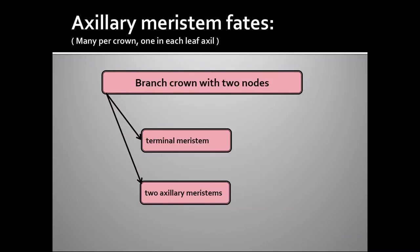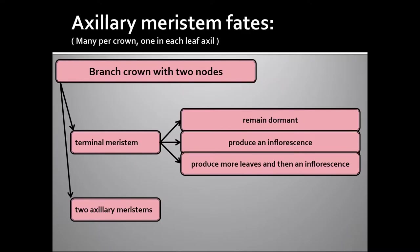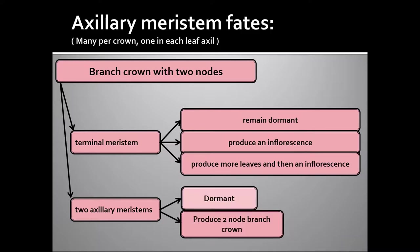The branch crown with two nodes has a terminal meristem and two axillary meristems. It is, in essence, an independent crown. That terminal meristem can remain dormant, produce an inflorescence, or produce some leaves and then an inflorescence. You also have the two axillary meristems, which can either remain dormant or each produce a two-node branch crown.